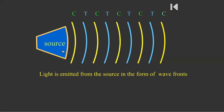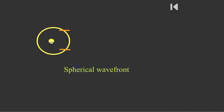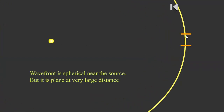Light is emitted from the source in the form of wave fronts — crest wave front, trough wave front, crest wave front, and so on. A point source emits a spherical wave front. At very large distances, if you consider a small portion of this spherical wave front, that portion may appear plane — therefore it is called a plane wave front. So wave fronts are spherical near the source but plane at very large distances.